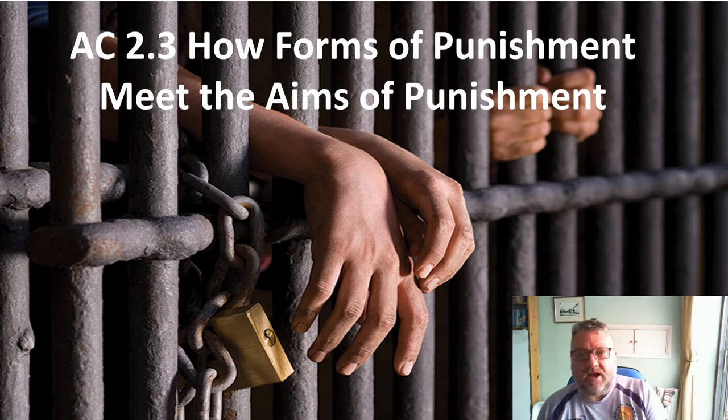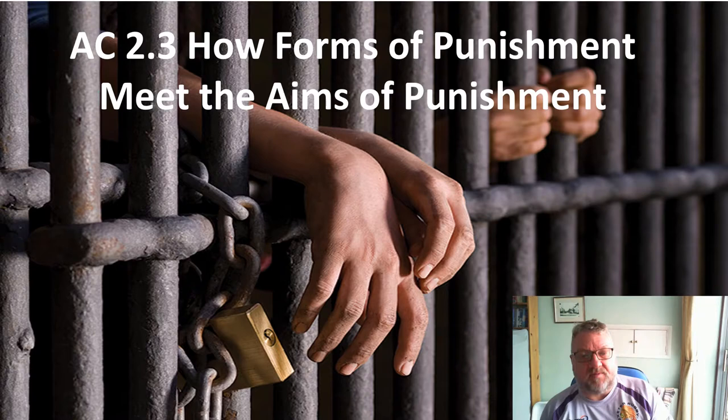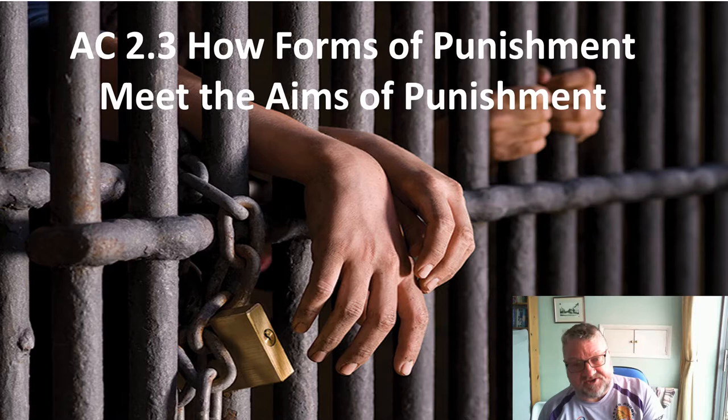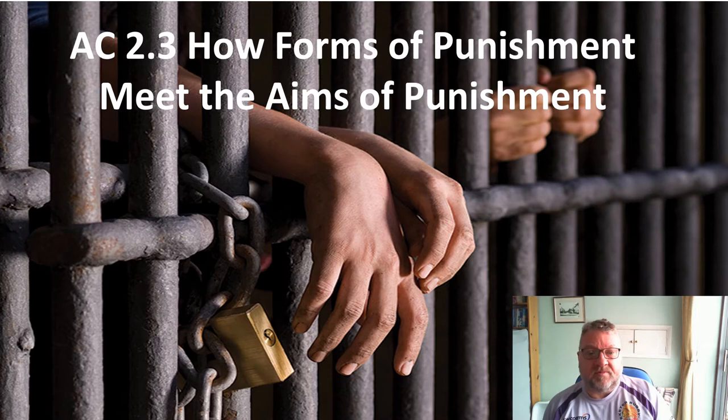Today we're going to look at AC 2.3 - how the forms of punishment meet the aims of punishment. By forms of punishment, we're talking about the sentences handed out in courts in England and Wales today: imprisonment, fines, community services, and discharges. The aims of punishment are our five aims: reparation, retribution, rehabilitation, deterrence, and protection.